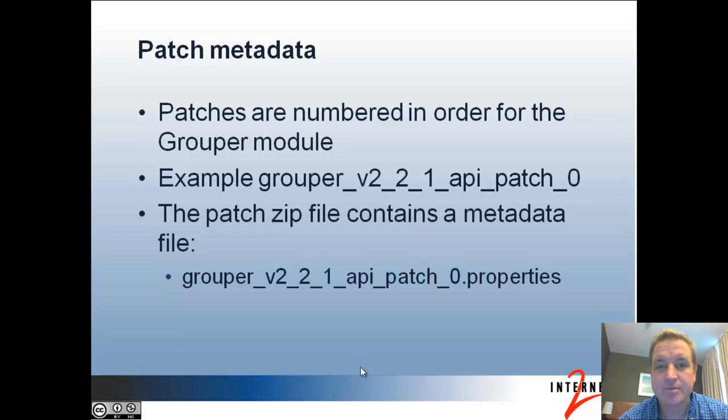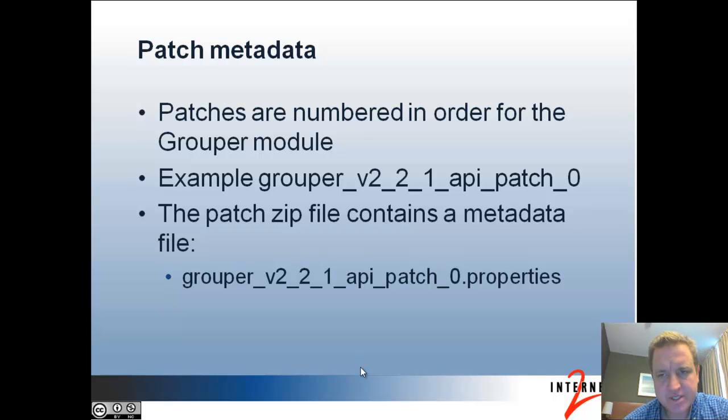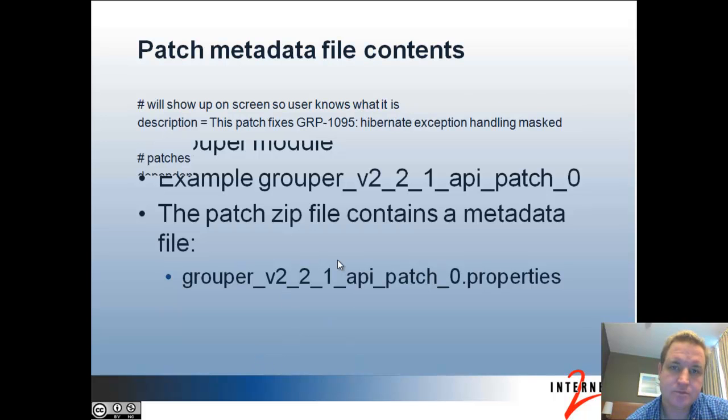First, let's talk about how patches are named. A patch is named with 'grouper_' and then the version — in this case 'v2_2_1' — then the module that the patch is for, so in this case it's an API patch, or it could be UI, WS, or PSP. Then the word 'patch', and then starting from zero, a sequential number. Inside the patch file, the properties file for the metadata is named the same thing.